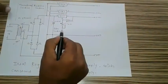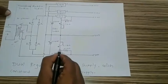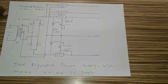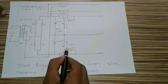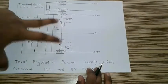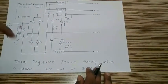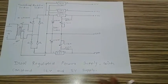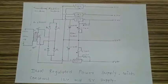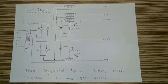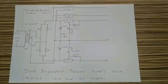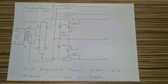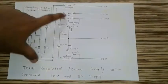We have also used two potentiometers, each with a value of 4.7K. Both potentiometers are used to vary the power supply. So in this way, this is the complete circuit diagram of our dual regulator power supply. If you want a constant negative 12V and negative 5V, then you have to change the output connection with respect to ground of both ICs.